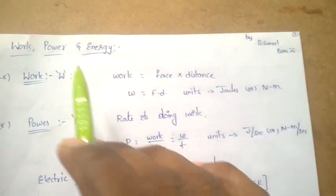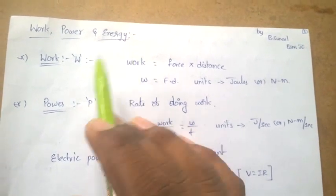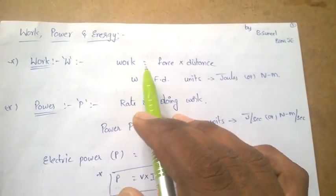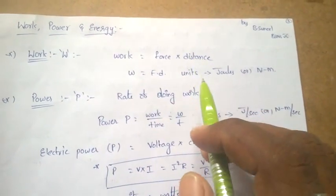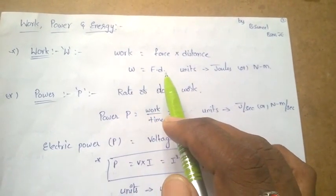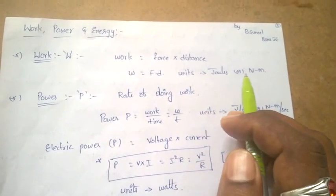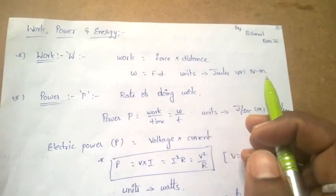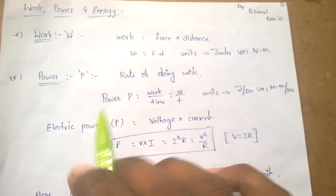The next topic is work, power, and energy. Work is nothing but force into distance — W equal to F into D. The units of work are joules, or Newton-meter. Power is nothing but rate of doing work. Power P equal to work by time. The units for power: work is joules, time is seconds, so units are joule per second or Newton-meter per second.